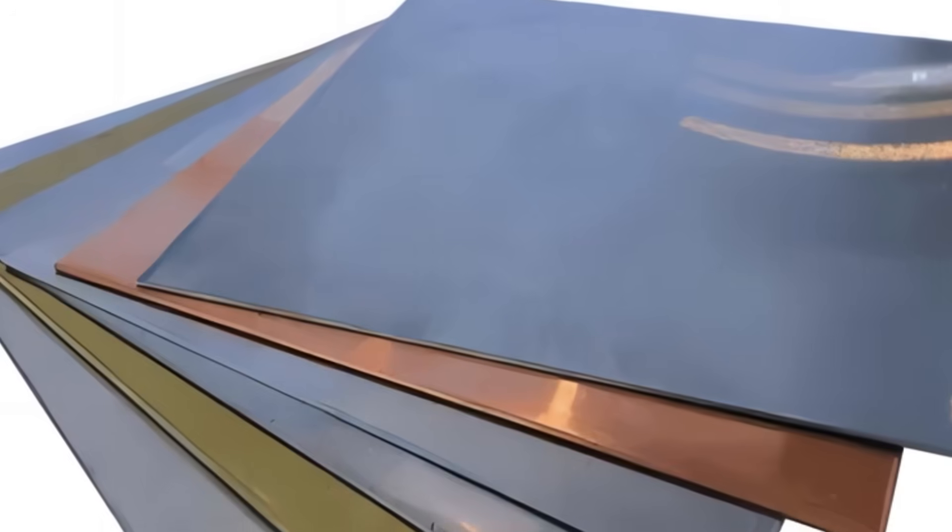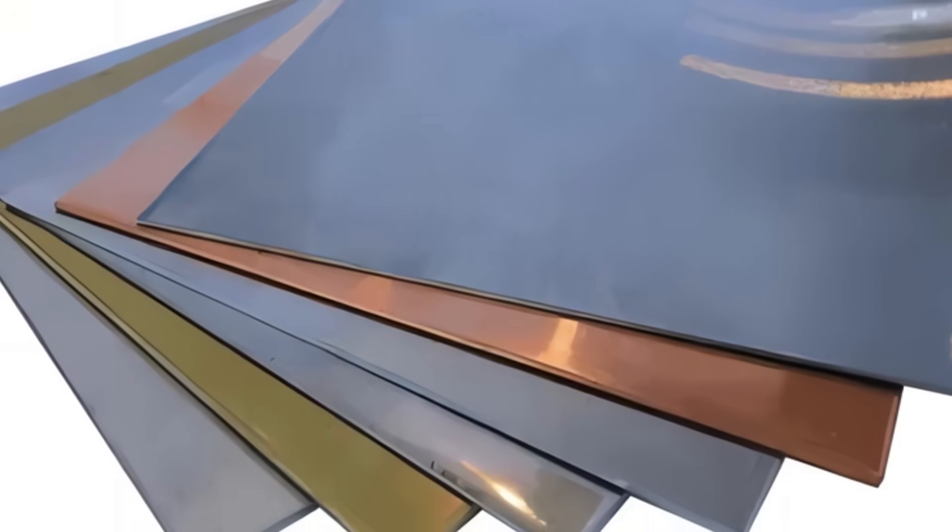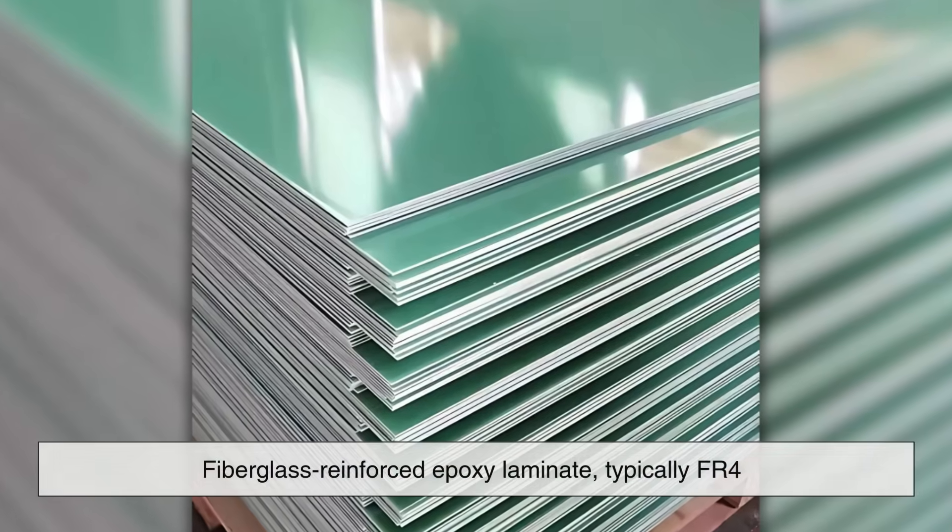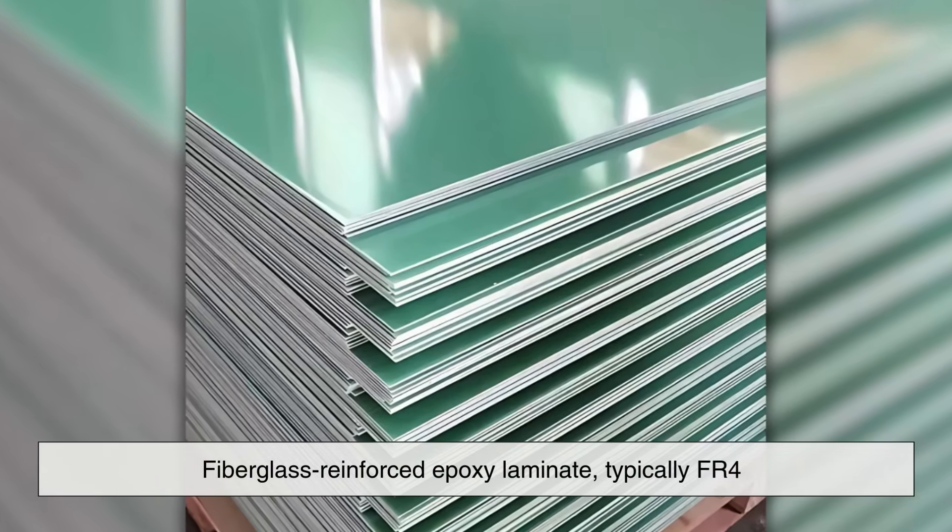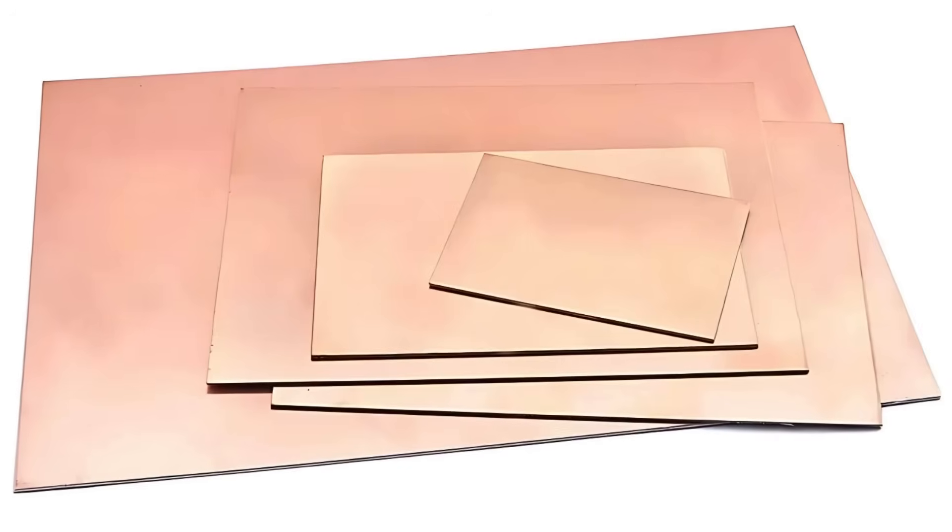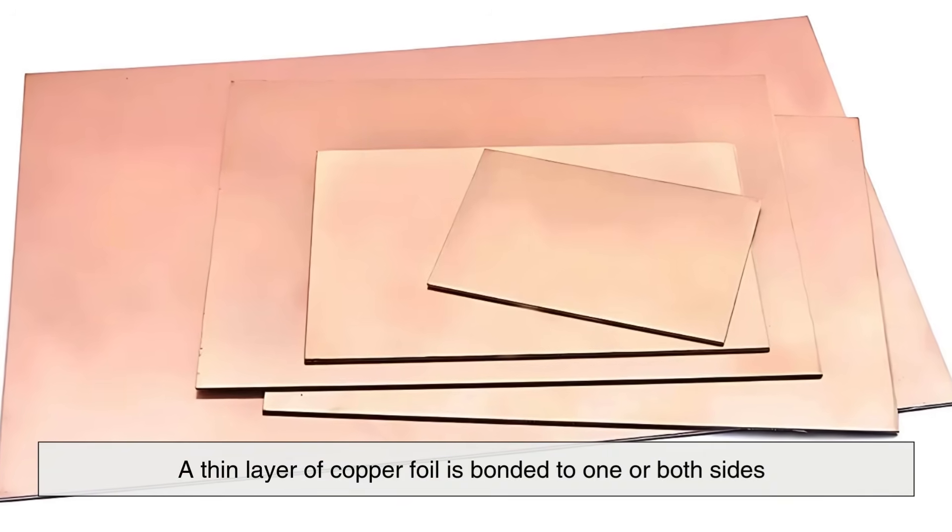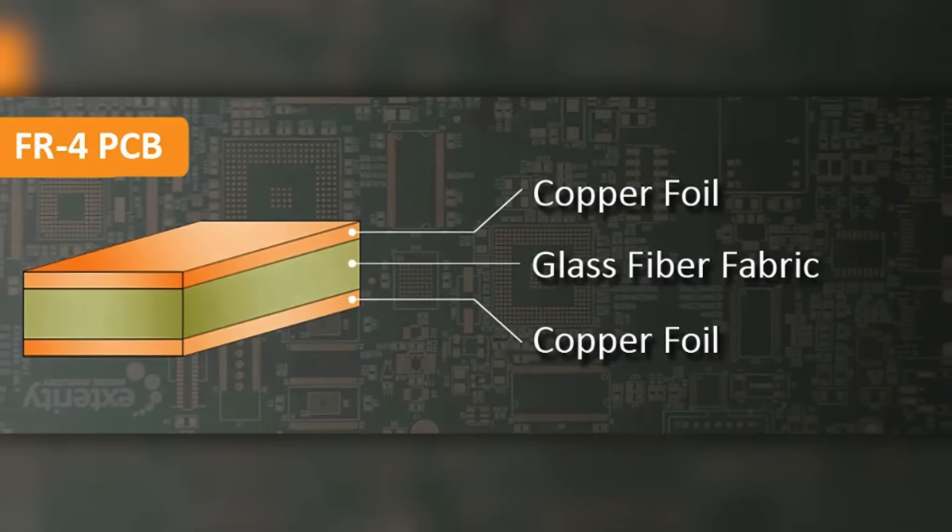The physical manufacturing starts with the base material of the PCB, called the substrate. Most commonly, this is a fiberglass reinforced epoxy laminate, typically FR4. It provides the rigid, insulating body of the board. Onto this, a thin layer of copper foil is bonded to one or both sides, depending on whether the board is single-sided or double-sided.